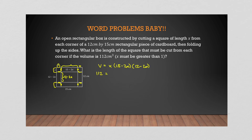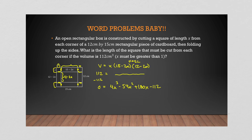Foiling this out, multiplying everything by x, then subtracting 112, you end up with: 4x³ − 54x² + 180x − 112 = 0. All coefficients are even, so divide everything by 2. That gives a simpler polynomial and makes using the rational root theorem easier.